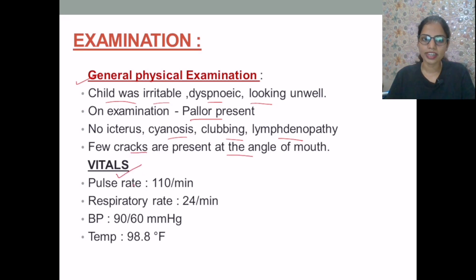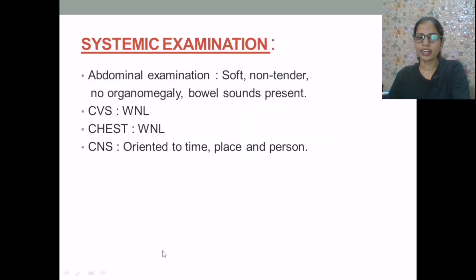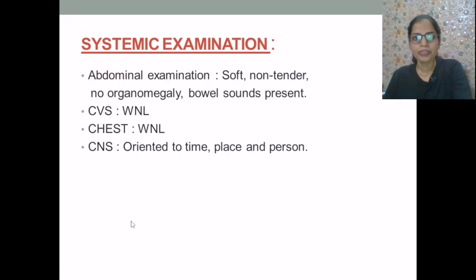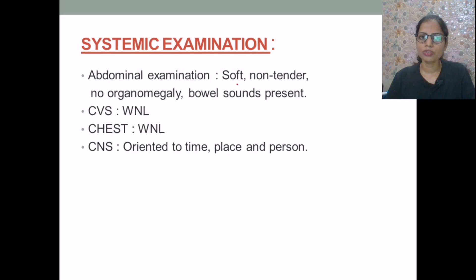Regarding vitals: pulse rate is 110 per minute, respiratory rate is 24 per minute, BP is 90/60 mmHg, and temperature is 98.8 degrees Fahrenheit. Upon systemic examination, the abdomen was soft, non-tender, with no organomegaly, and bowel sounds were present. CVS and chest were within normal limits. CNS was oriented to time, place, and person.